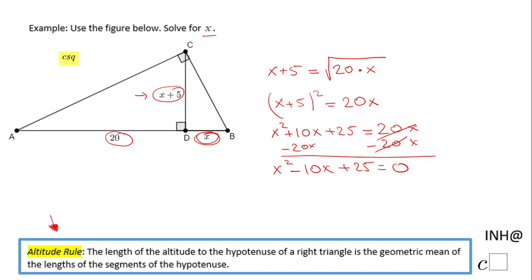It works by factoring, also if you notice that this is a perfect square, that is another method. Let's say we do factoring. We're looking for two numbers whose product is 25 and the sum is negative 10, so those are negative 5 and negative 5. So we have here x minus 5 times x minus 5 equals 0.